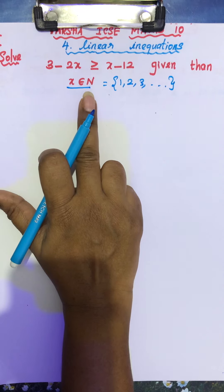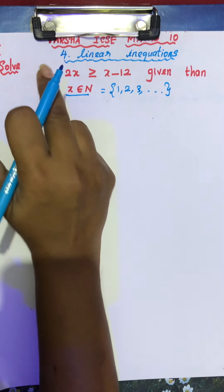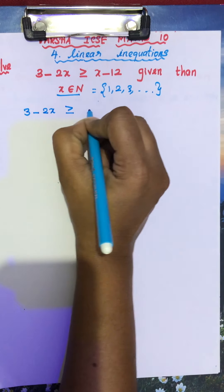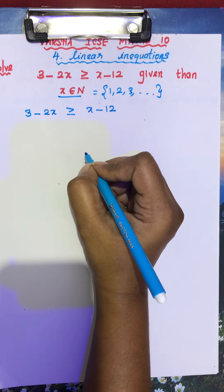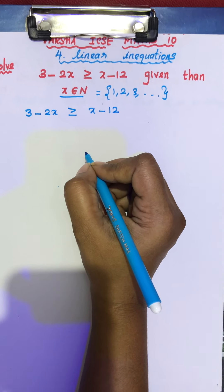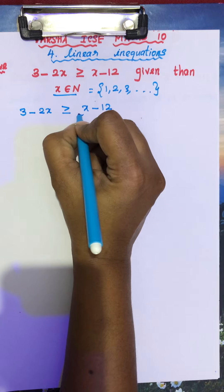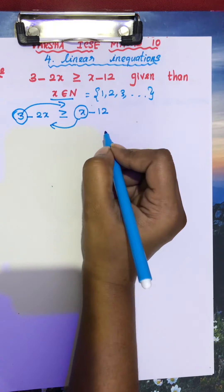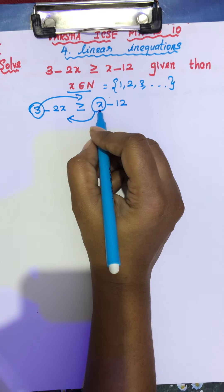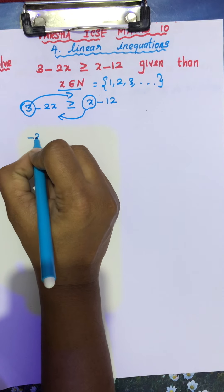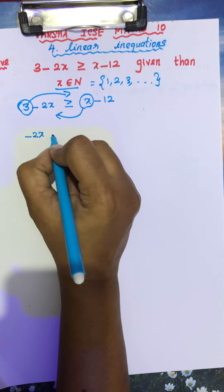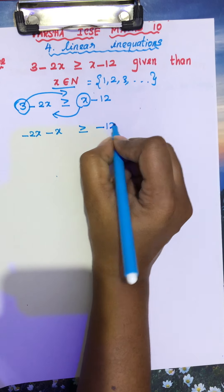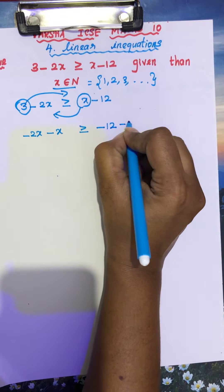Take your question: 3 minus 2x is greater than or equal to x minus 12. You have to find the value of x. For that, we are going to shift x to this side and 3 to the other side. They are changing their places, so the sign will change. Here, already minus 2x is there; this x comes as minus x. Already minus 12 is there; 3 goes that side, so minus 3.